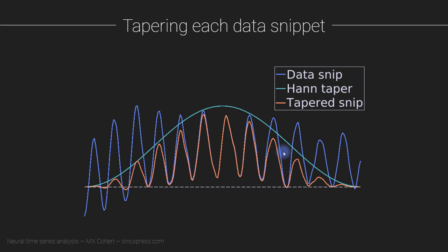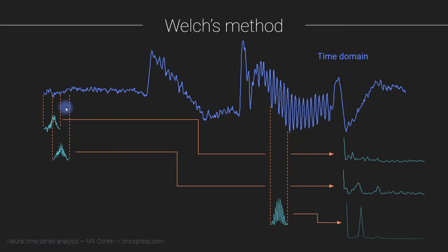You can also see that we are getting rid of some valid data — there's nothing wrong with the data at the edges of the blue signal, yet we're attenuating it. That is one of the motivations for having these windows overlap: the part of the signal attenuated by the taper in one window will be at full amplitude in the next overlapping window. So having some overlap is generally a good idea.